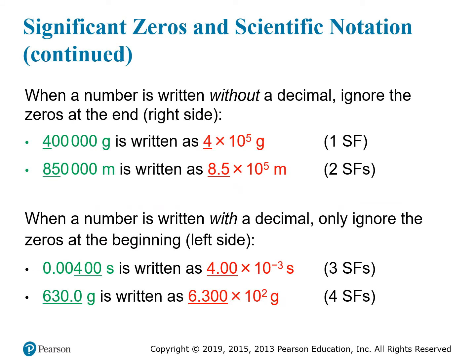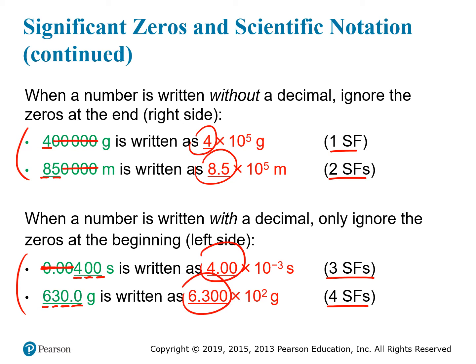On this slide, we see how to use the significant figures in a number to write the coefficient when it's put into scientific notation. It also allows us to see the difference between numbers with and without a decimal point. For the first set of numbers, there's no decimal point, which means we can ignore all of the trailing zeros — so one number has just one significant figure and another has two. For the second set, there is a decimal explicitly written, so we can include the trailing zeros on the right-hand side. Just remember that you always ignore leading zeros on the left-hand side. So the first number has three significant figures, and the second number has four. Notice that when you put these numbers into scientific notation, all of the significant figures are included in the coefficients, even in cases where you're including zeros at the end.